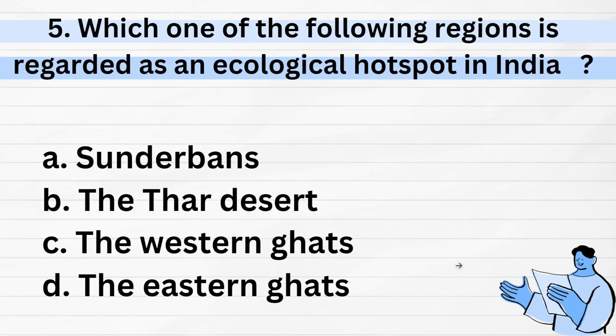Which one of the following is regarded as an ecological hotspot in India? Options: one, Sundarbans; two, the Thar Desert; three, the Western Ghats; four, the Eastern Ghats. The correct answer is option C — the Western Ghats is an ecological hotspot in India.